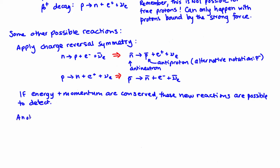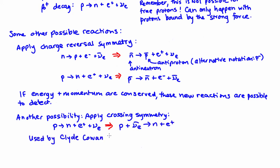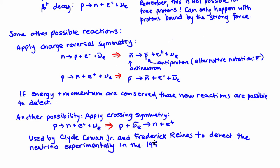Let's have another look at beta plus decay. What happens if we move the electron neutrino to the left-hand side? Well we get p + v̄ₑ → n + e⁺. It turns out this reaction is what led Clyde Cowan Jr. and Frederick Reines to experimentally verify the neutrino's existence in the 1950s. This led to a Nobel Prize for Reines in 1995.